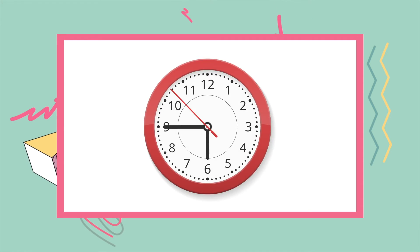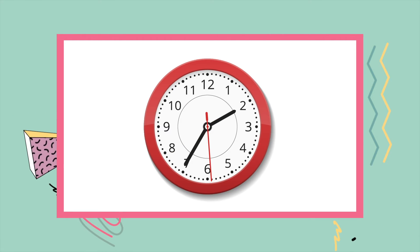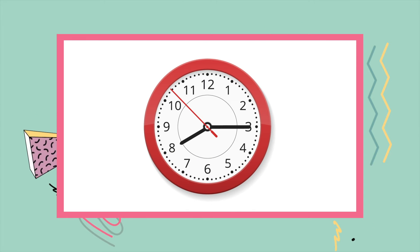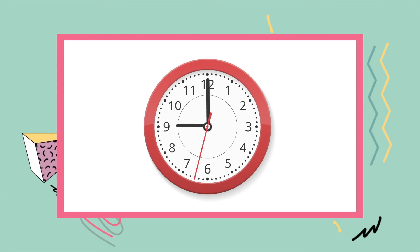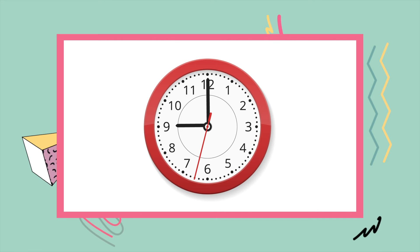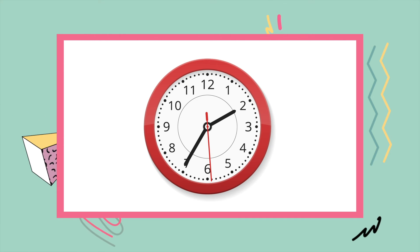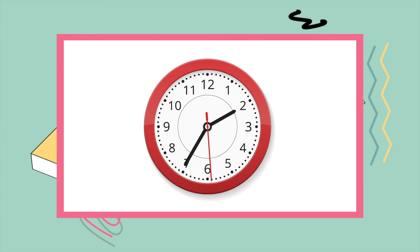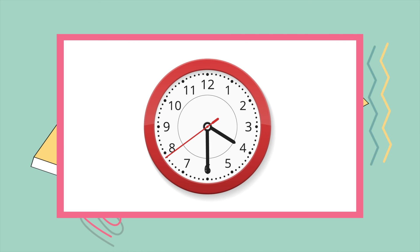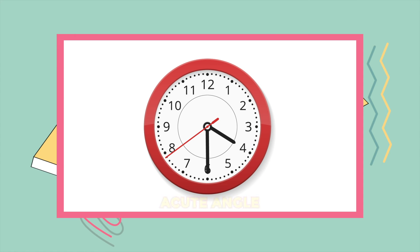Now let's have a look at the picture of different clocks showing different times, and find out the angles by looking at the big and small hand of the watch. At the first clock, the time is 9 o'clock, so the angle here is a right angle. In the second clock, the time is 4:35, so the angle here is an obtuse angle. In the third clock, the time is 4:30, so the angle here is an acute angle.